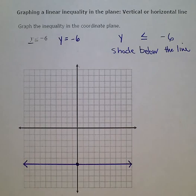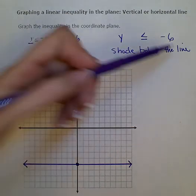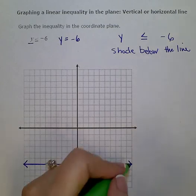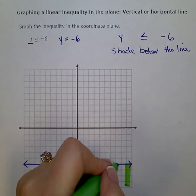So whatever is over here on the right-hand side of my inequality, I just think to myself, the line. So shade below the line. So that means I'm going to add my shading down here below the line.